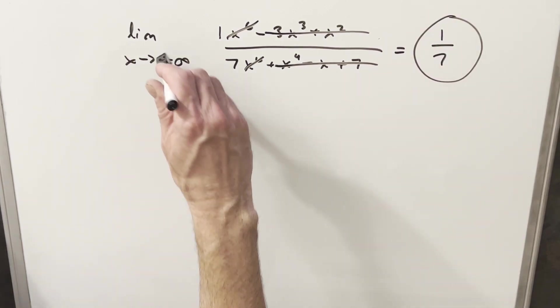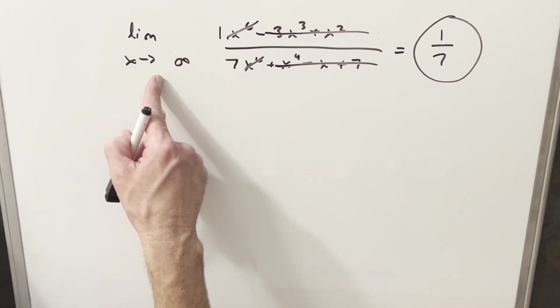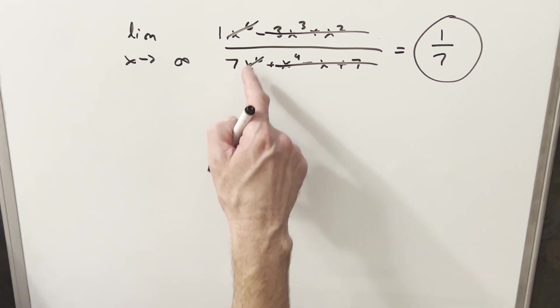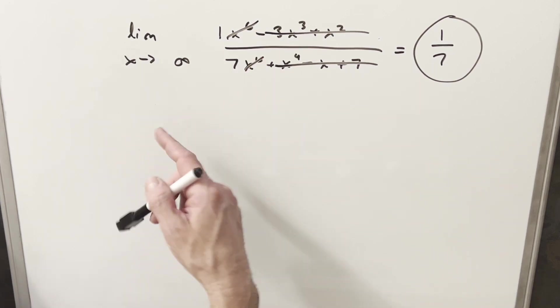And just notice now, if we took the minus off this and we were just looking at the limit as x is approaching infinity, well, it's going to be the exact same thing. Everything's going to cancel the same way. The even power made everything positive, and so we'd still end up with 1 over 7.